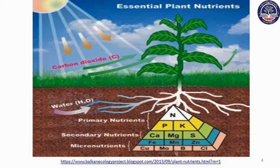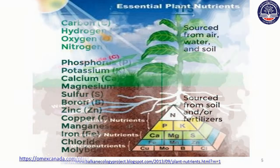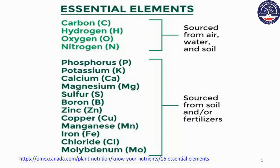Essential element materials include Ca and Mg. Essential elements also include carbon, hydrogen, oxygen, and hydrogen, sourced from air, water, and soil.